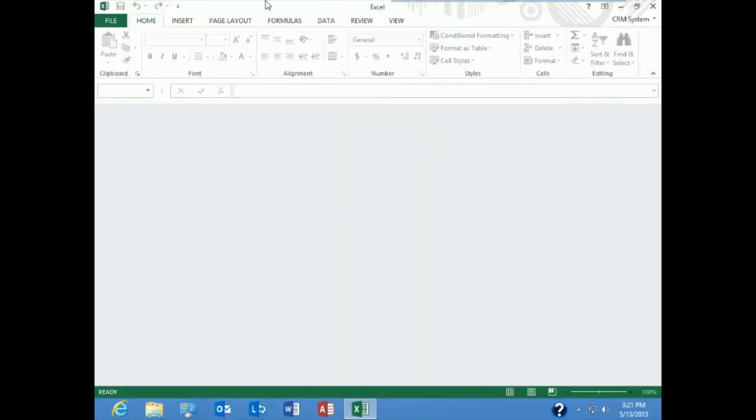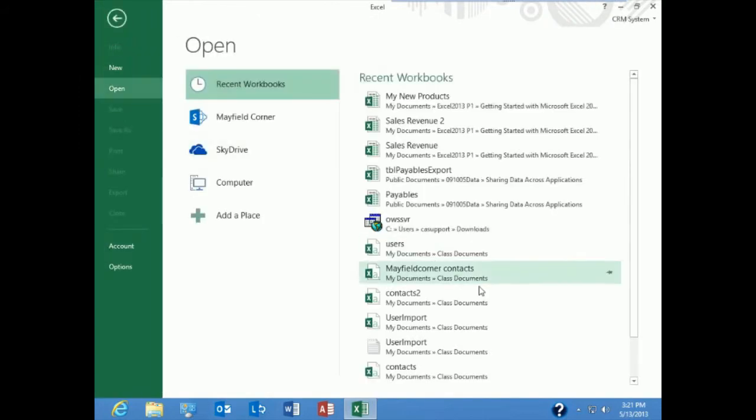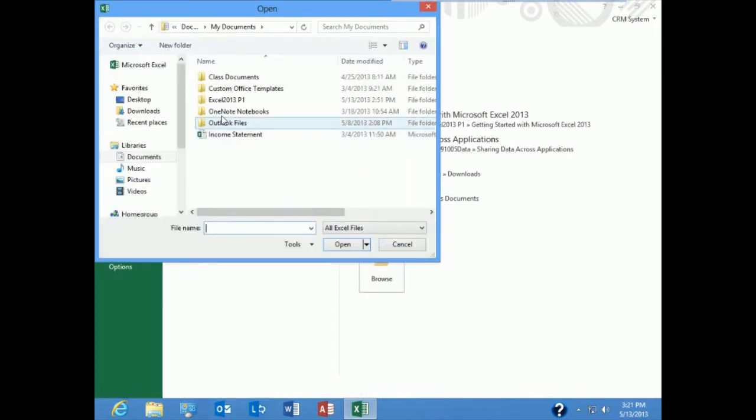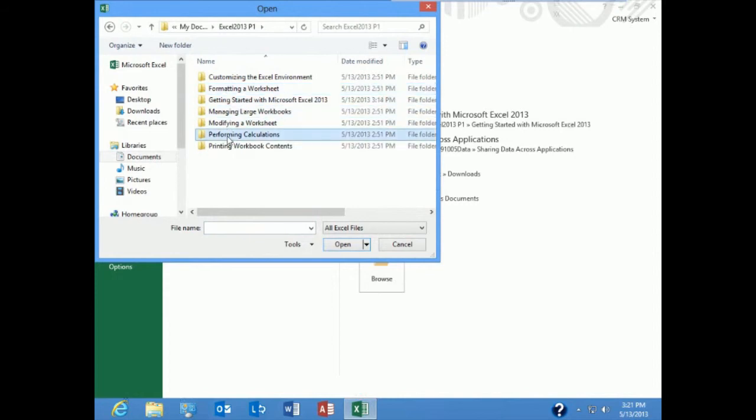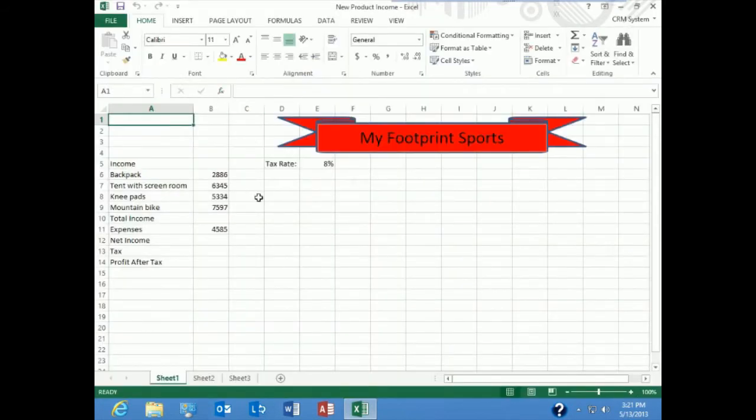I'm going to open up a file. Click on file, open and under my documents in the folder called performing calculations. I'm going to open up new product income. Now what we have here is our income based on product, backpacks, tents with the screen room, knee pads, mountain bikes. We also have a tax rate up here.